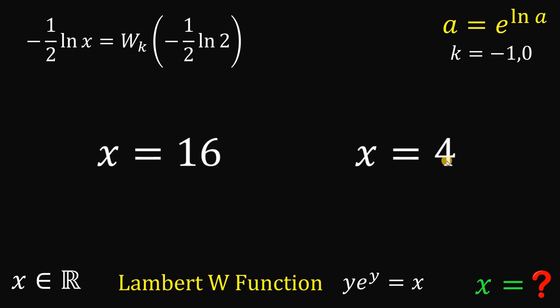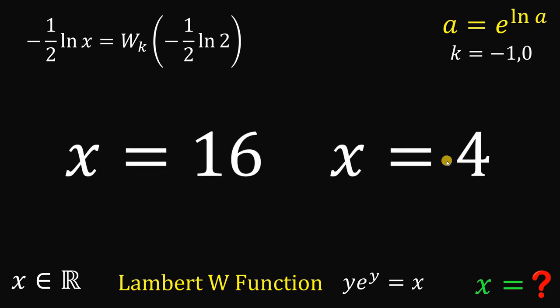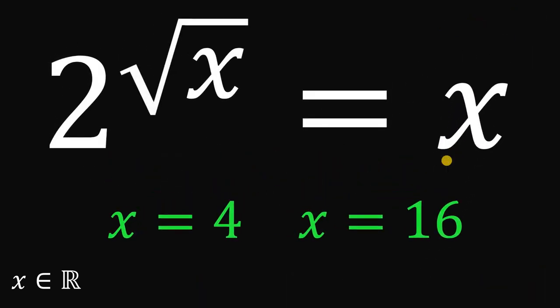Therefore, using the Lambert W function, we get two possible values for x in this equation — that is our algebraic approach. The only real values of x that satisfy 2^(√x) = x are x = 4 or x = 16. And as always, we are done.